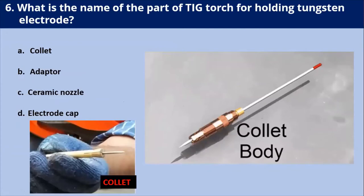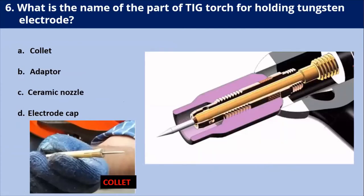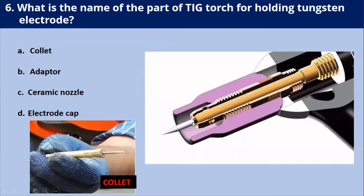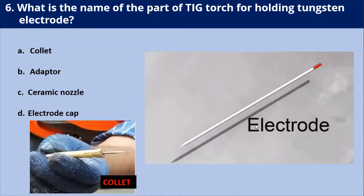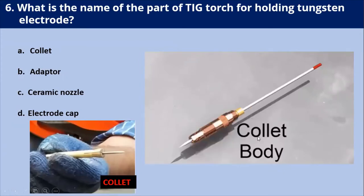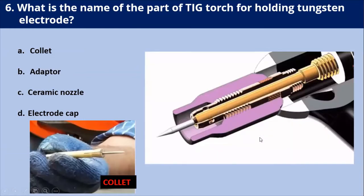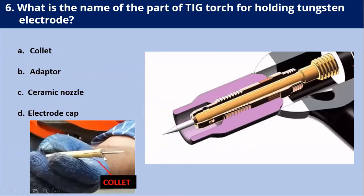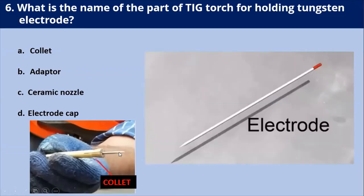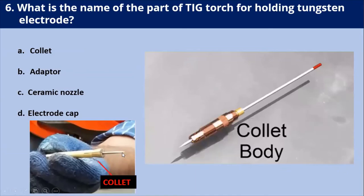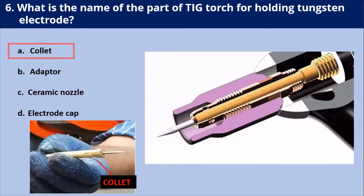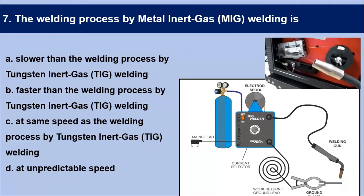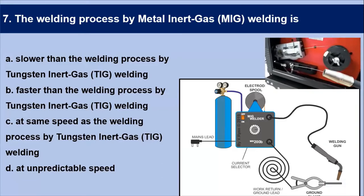Next question: what is the name of the part of the TIG torch used for holding the tungsten electrode? As seen in the diagram and video, the tungsten electrode is held in a collet. There is a collet body, and the complete assembly is fitted inside the big torch. The tungsten electrode is inserted into the collet. So the answer is a collet.